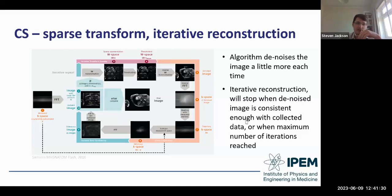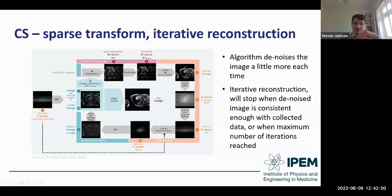For each denoising step, the result is compared to the original collected data. If it's consistent enough with the collected data, or the maximum number of iterations has been reached, the reconstruction stops and the final image is output. That's the broad brushstroke of how these algorithms work — each individual manufacturer does it slightly differently.